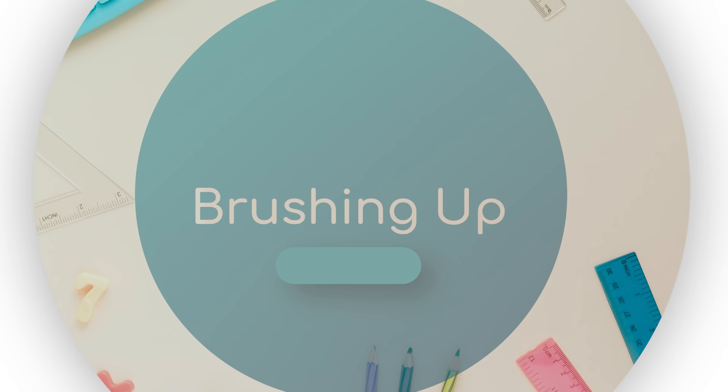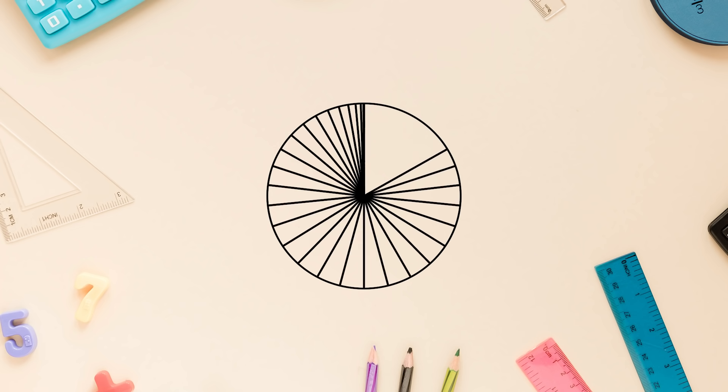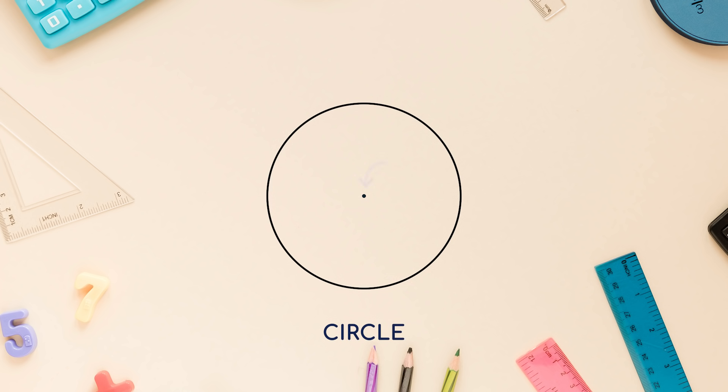Brushing up. You must have learned these concepts in earlier classes. The collection of all the points in a plane which are at a fixed distance from a fixed point in the plane is called a circle. The fixed point is called the center of the circle and the fixed distance is called the radius of the circle. A circle divides the plane on which it lies into three parts.